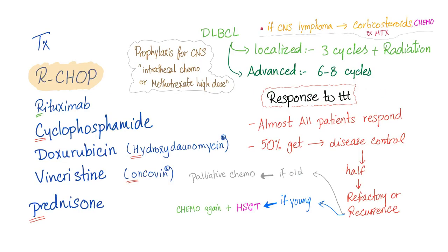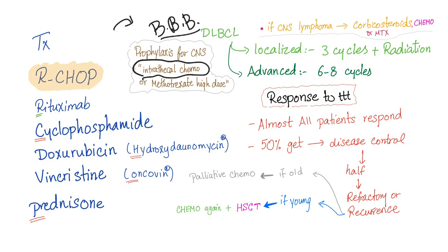To treat diffuse large B-cell lymphoma, we use the R-CHOP regimen: R for rituximab, and CHOP stands for cyclophosphamide, doxorubicin, vincristine, and prednisone. CNS prophylaxis is necessary because the disease can involve the brain. We use intrathecal chemotherapy—specifically high-dose methotrexate injected directly into the CSF—because systemic chemotherapy cannot pass the blood-brain barrier.